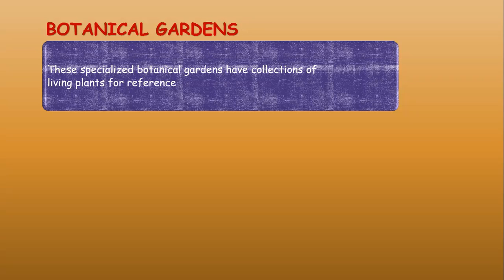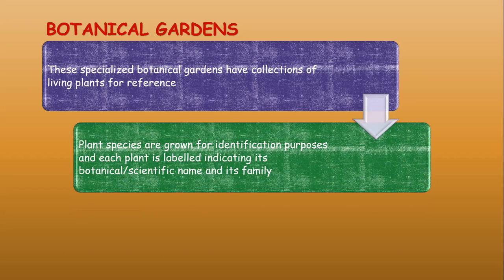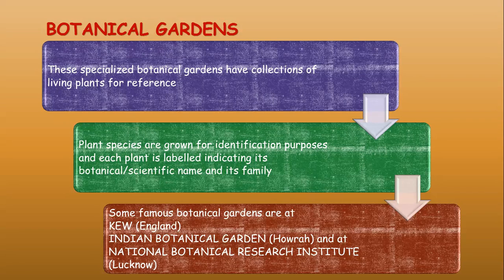Botanical gardens have collections of living plants for reference — this is the key difference from herbaria, which contain dried specimens. Plant species are grown for identification purposes, and each plant is labeled with its botanical or scientific name and its family. Famous botanical gardens include those at Kew, England; Indian Botanical Garden, Howrah; and the National Botanical Research Institute, Lucknow.